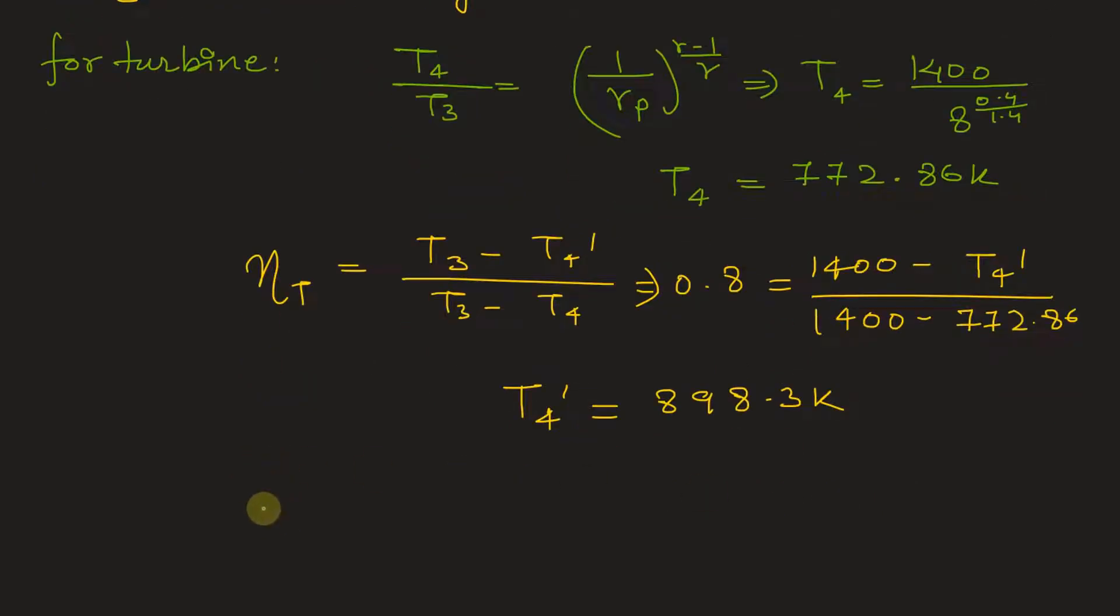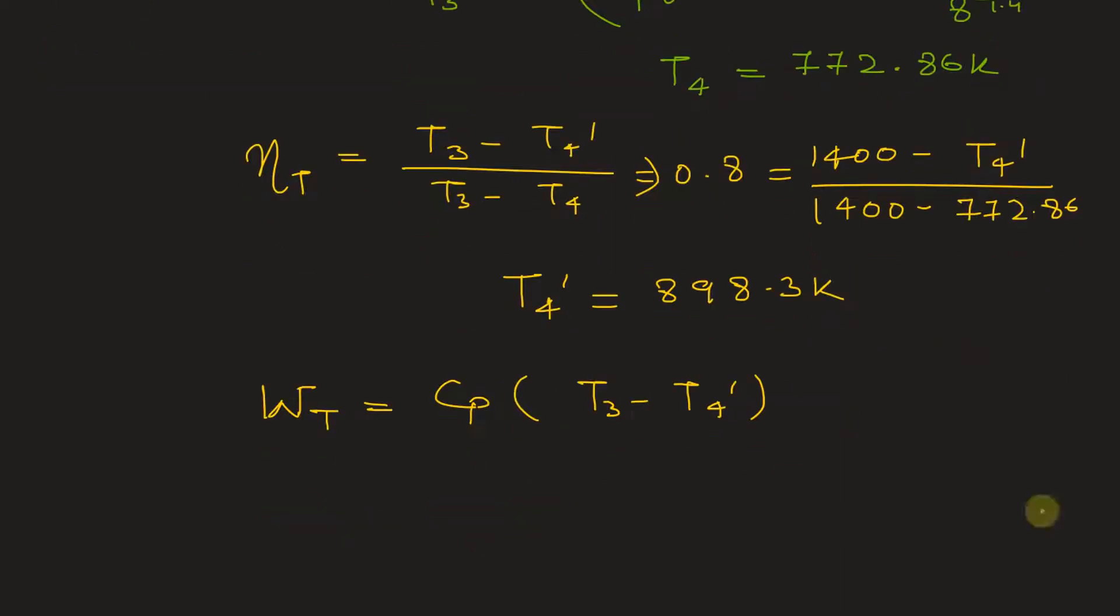Now we can find the work done by the turbine. So work done by turbine is Cp T3 minus T4 dash. Or we can just directly find the network done.